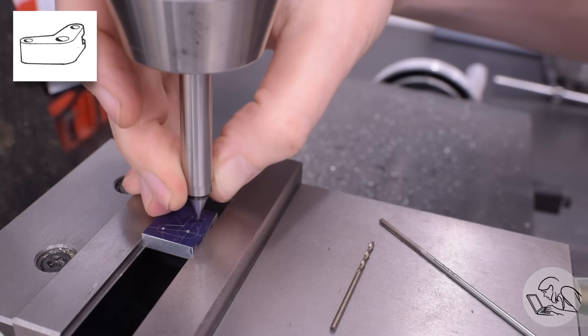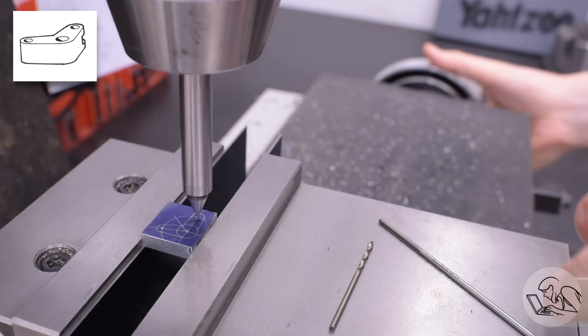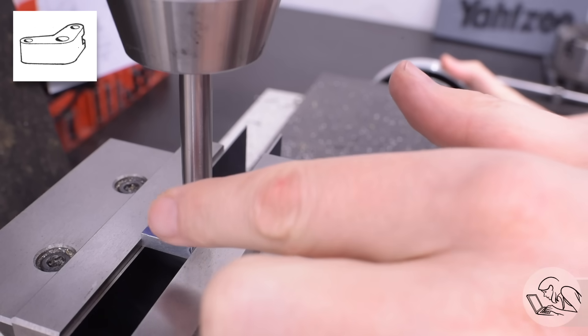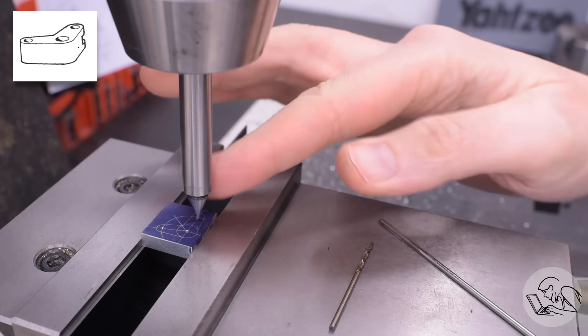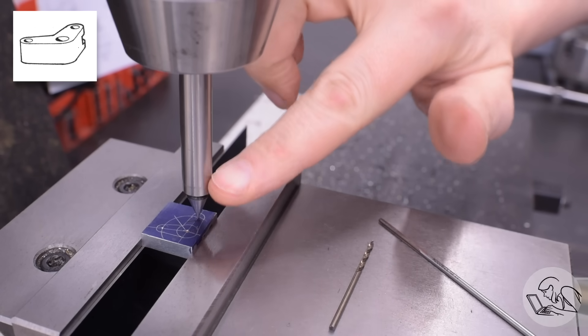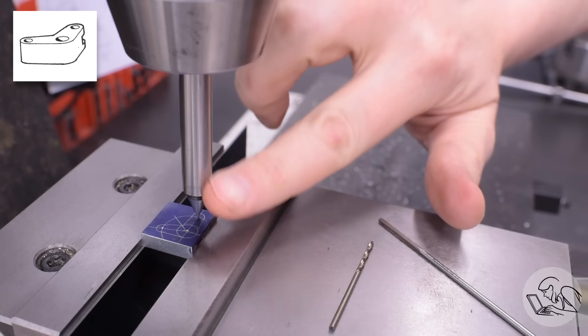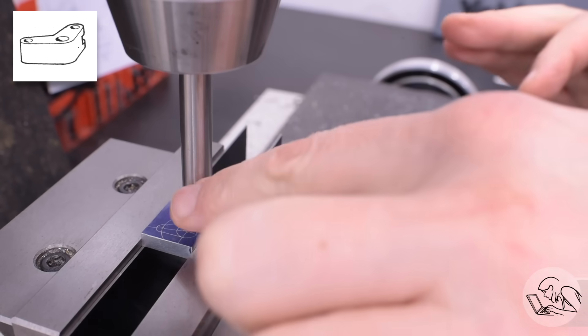Now to center up on the first of the holes I'm going to use the pointy end of one of my edge finders. If you've ever wondered what that's for, this is one of many uses for it. You can place it in a punch mark and then slide the mill table around until the edges of the point line up with the shank on the edge finder. You can actually feel with your finger quite accurately when this is the case. This is accurate to within a few thousandths. For most things that's going to be good enough.